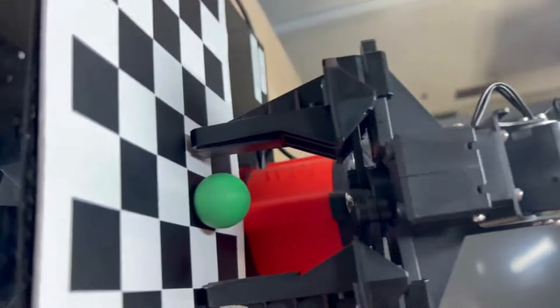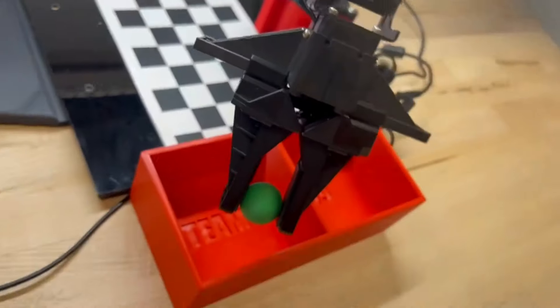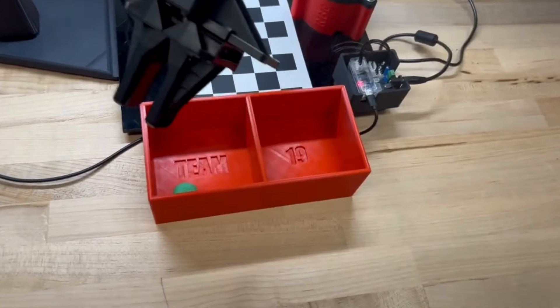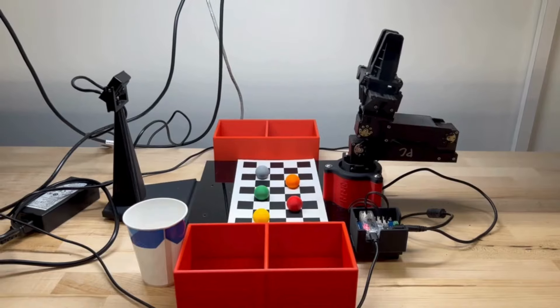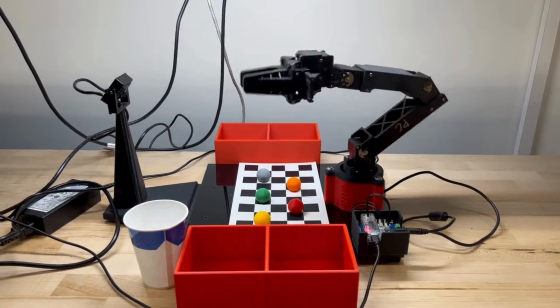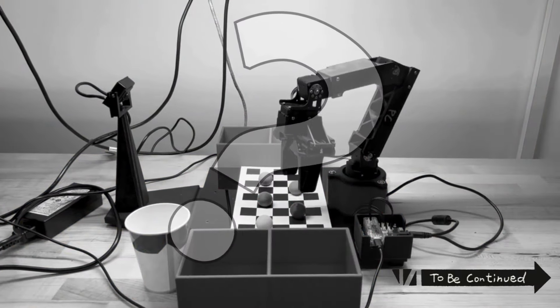We used this robot arm to identify, grab, and sort different colored balls. Hello everybody, and welcome to Team 19's final robotic arm video demonstration for RBE 3001. But wait, how do you even get a robot arm to do this in the first place?